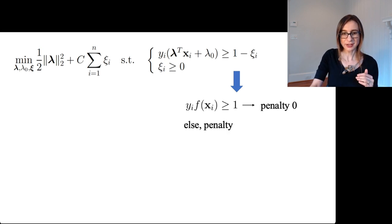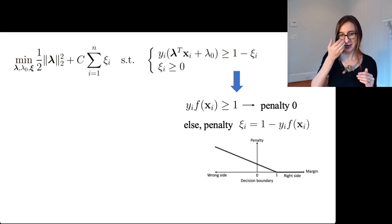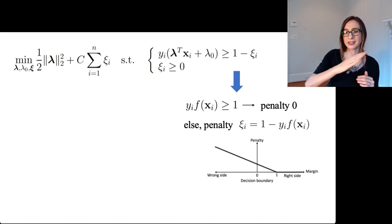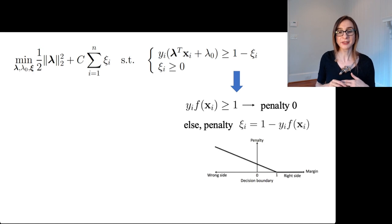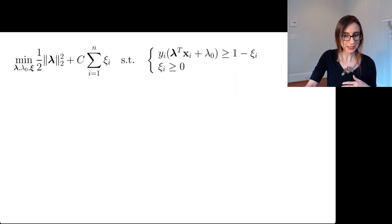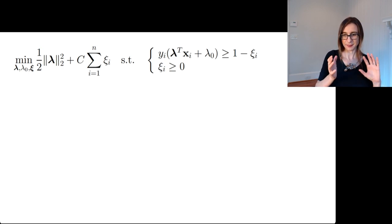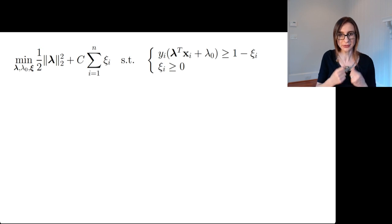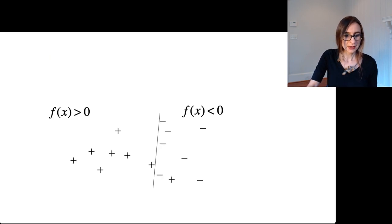If the margins are less than one, that's where it assesses this penalty that's linear in how far you are away from having a margin of one. Now there are two terms here. There's the keep the margin large term and a slack term. And these trade off with each other depending on the user defined value of C.